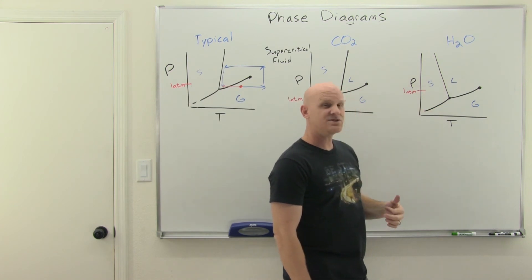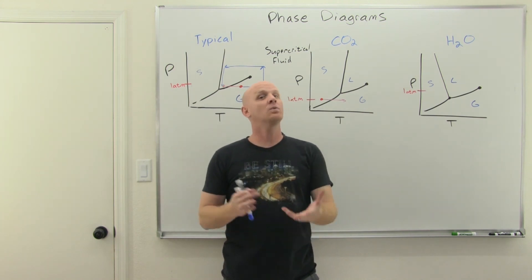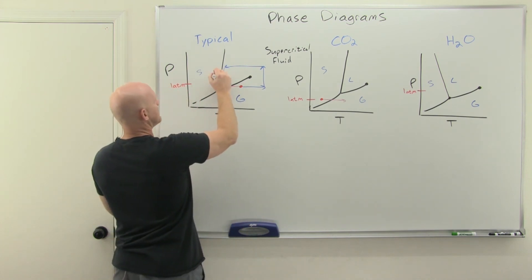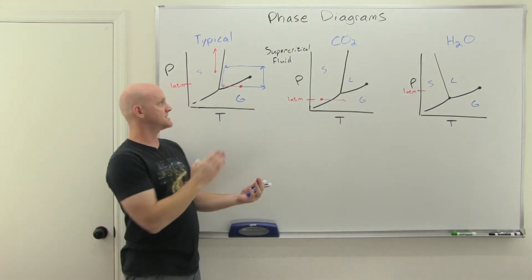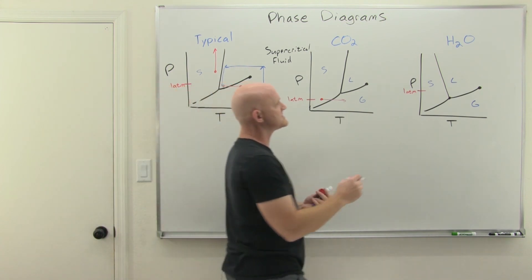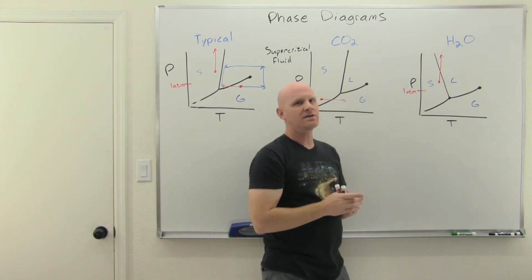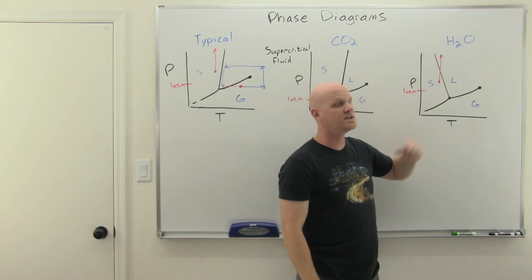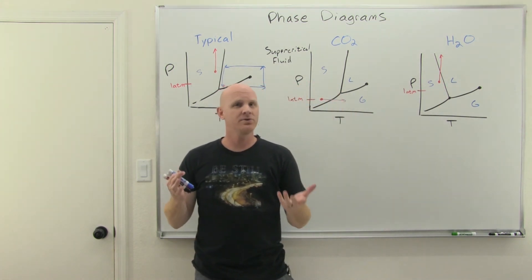As you jack up the pressure on a substance, it wants to get more compact and dense. For a typical substance, taking the solid phase and increasing the pressure just makes a more condensed solid — it stays solid. But if you do the same with water and jack up the pressure, you actually cross that solid-liquid line of equilibrium and the solid turns into a liquid. The ice actually melts. So at high pressures, ice melts.